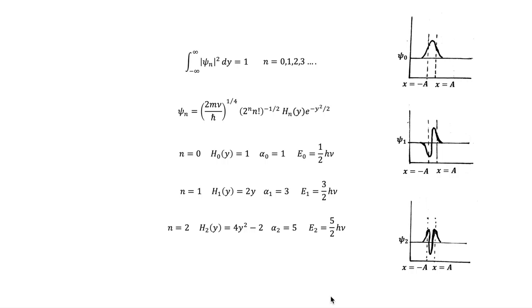The wave functions corresponding to the first three energy levels of a harmonic oscillator are shown here. If the particle is oscillating classically with an energy Eₙ, it would be confined between -a and a.